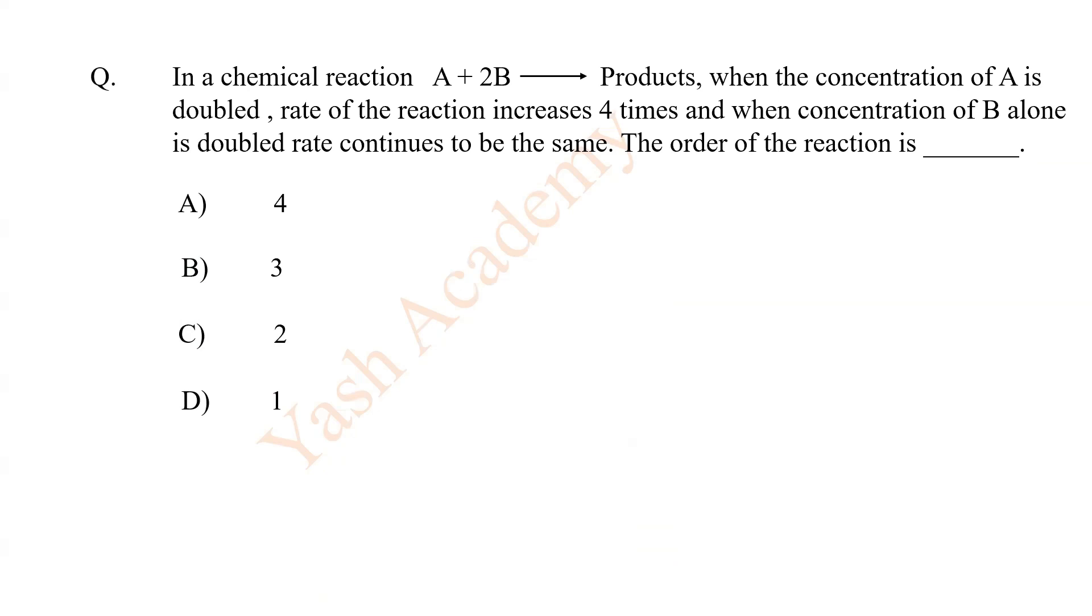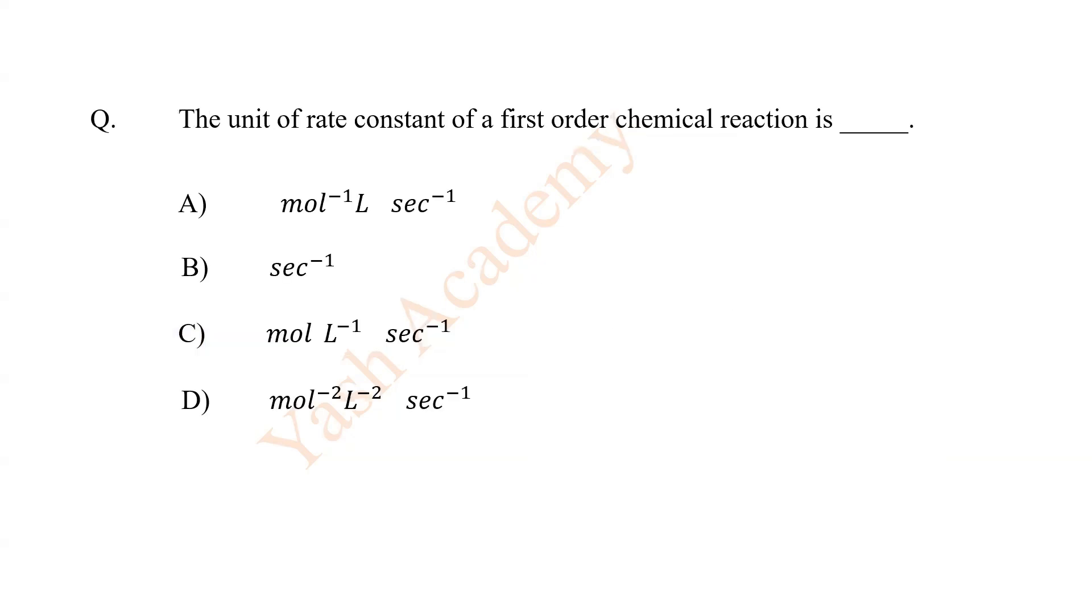In a chemical reaction A plus 2B gives products. When the concentration of A is doubled, the rate of the reaction increases 4 times, and when the concentration of B alone is doubled, rate continues to be the same. The order of the reaction is C, 2.